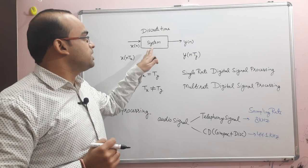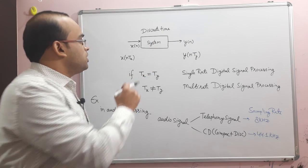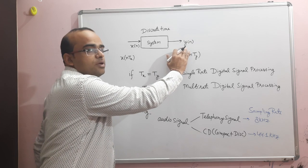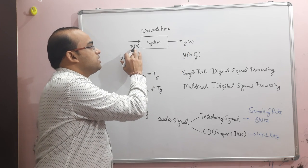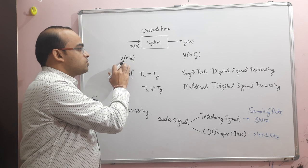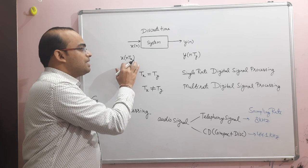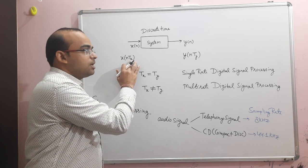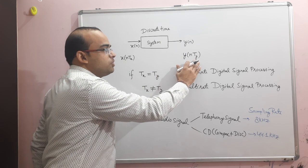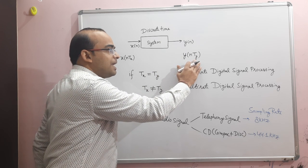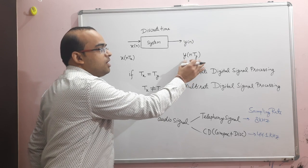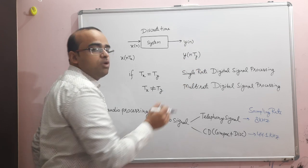Suppose we are having a discrete time system. In this we have given the input x and its output is suppose y. The actual representation is x(Tx) where Tx is the sampling time on the input side, and similarly the output side has sampling time Ty, so y(Ty). This is the actual representation of the discrete time system.